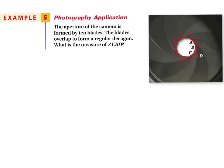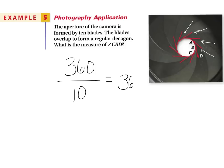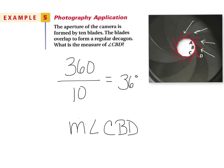Back to talking about our camera. In Example 5, the aperture of a camera is formed by 10 blades that overlap to form a regular decagon. What is the measure of angle CBD? Angle CBD is an exterior angle. A decagon has 10 sides and 10 exterior angles. Since all exterior angles sum to 360°, we divide 360° ÷ 10 = 36 degrees. The measure of angle CBD is 36 degrees.